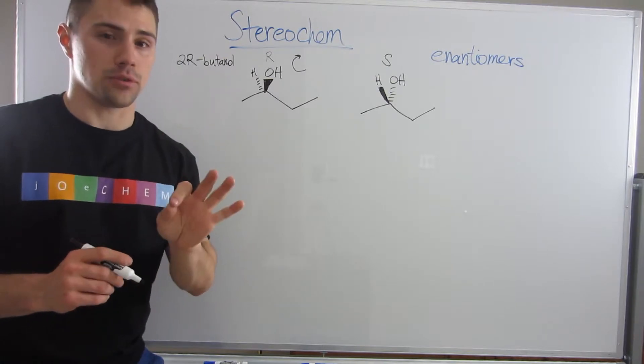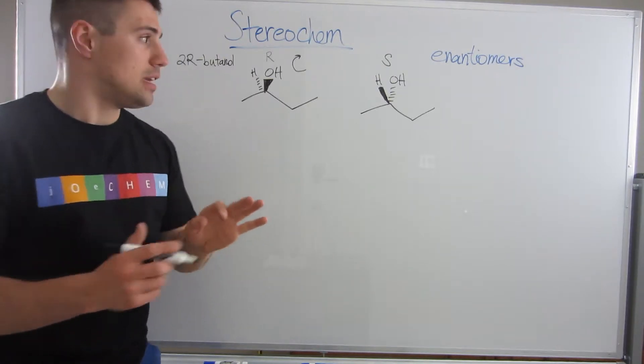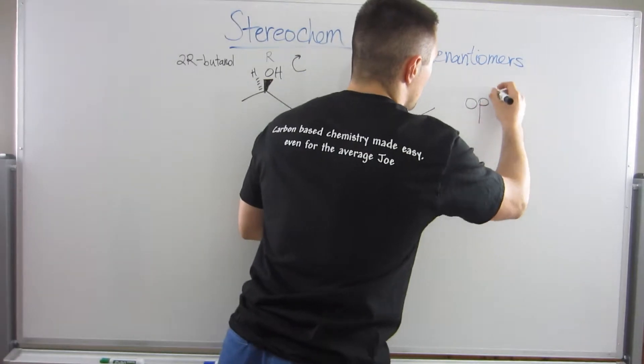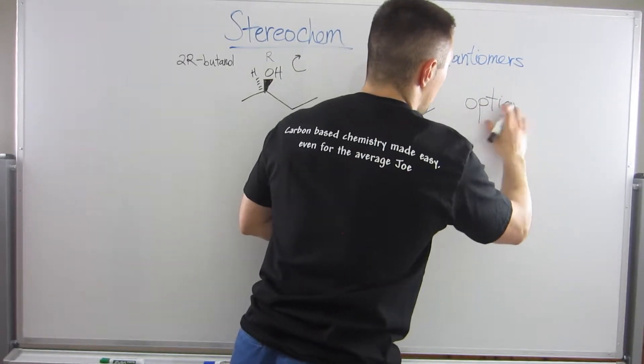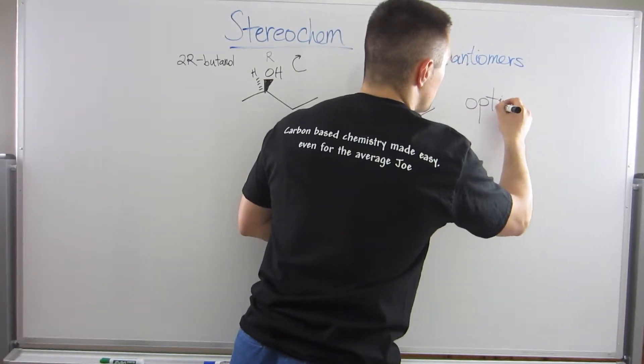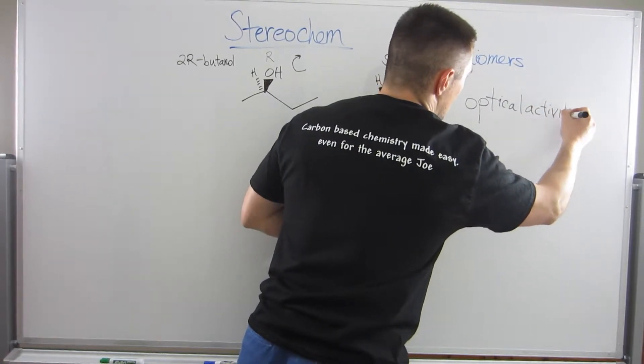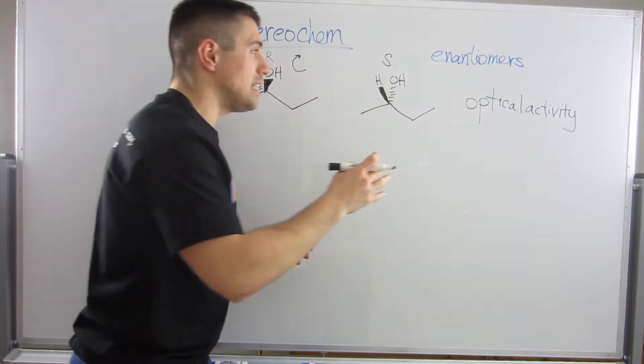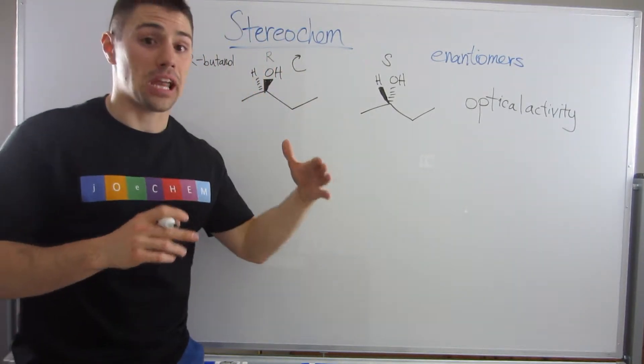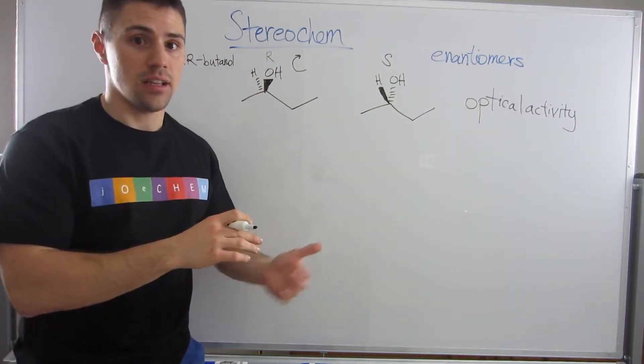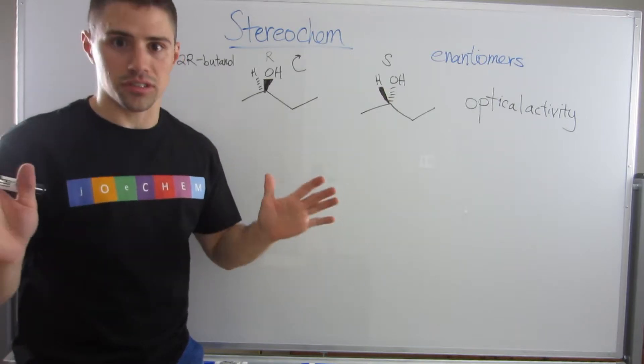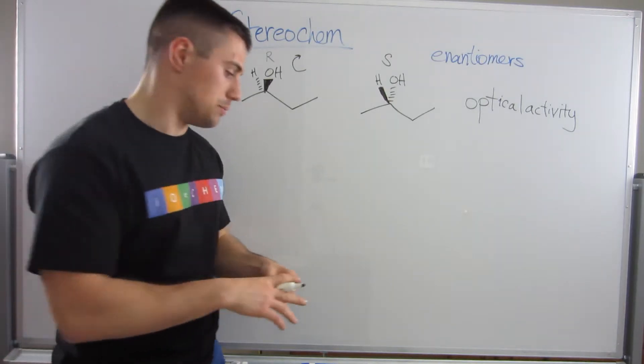The one property they differ on is something called optical activity. So what I mean by that is the only thing they differ by is how they rotate the plane of polarized light. Now that is just a whole bunch of words, so let me kind of explain what I mean by that.